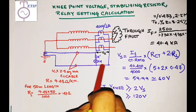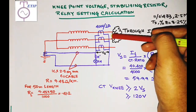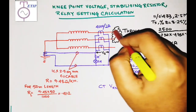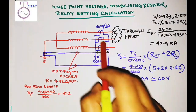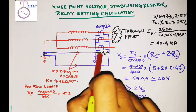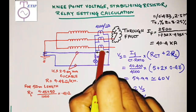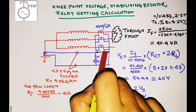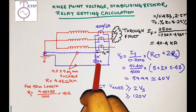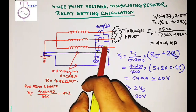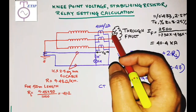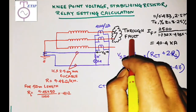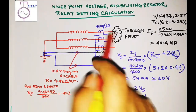Since all the CTs are connected in parallel, an equal voltage Vs will appear across all the CTs. Suppose a line-to-line through fault has occurred — current will try to drive through this relay coil, circulating in this path. This saturation voltage, or stabilizing voltage, will drive a current through the relay coil. If that current is higher than the relay pickup current, the relay will pick up, even though the fault is outside the protection zone. Our first objective is to prevent pickup of the relay for faults outside the zone.